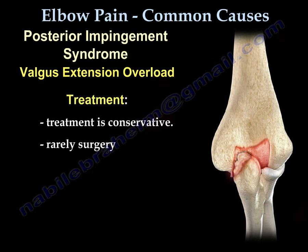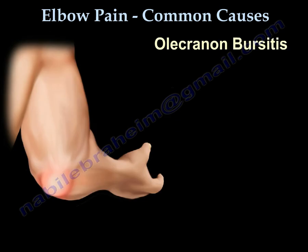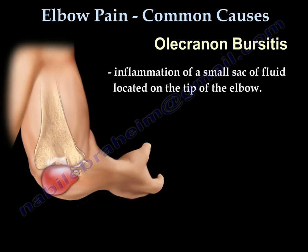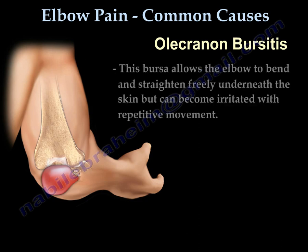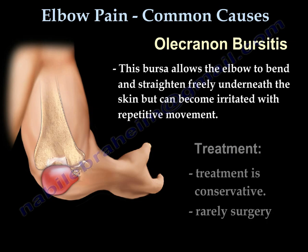Treatment for posterior impingement is usually conservative and rarely surgical. Olecranon bursitis is inflammation of a small fluid-filled sac located at the tip of the elbow. This bursa becomes irritated and inflamed with repeated motion of the elbow. Treatment is usually conservative and rarely requires surgery.